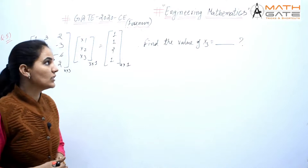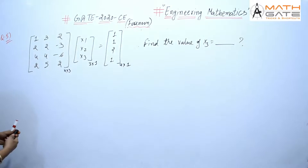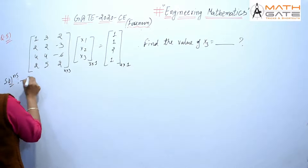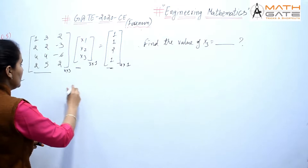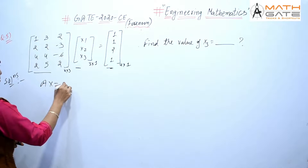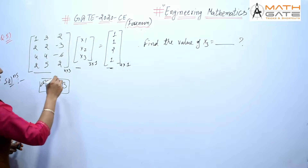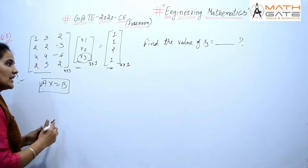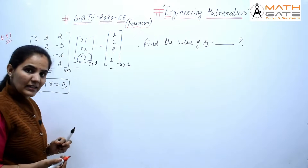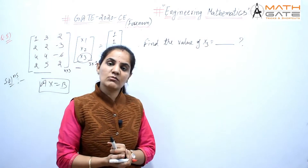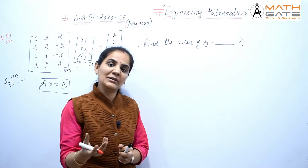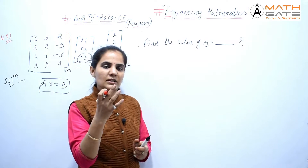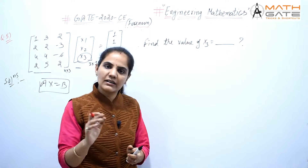Let's discuss the next question from Civil 2020, which is from matrix algebra. You have to find out the value of x3 from a given linear system of equations. We will form the augmented matrix [A|B] and solve to find x3.